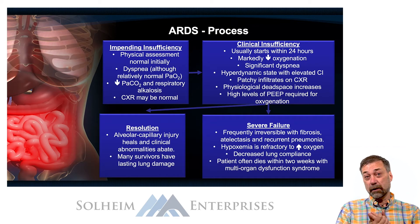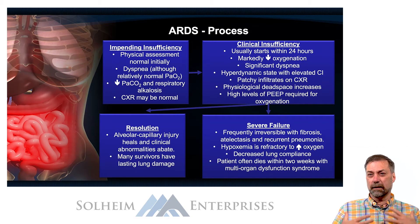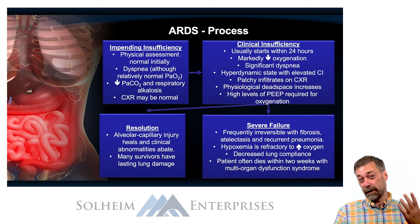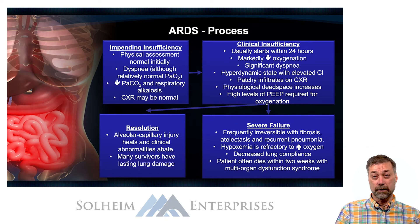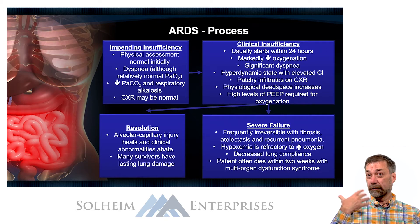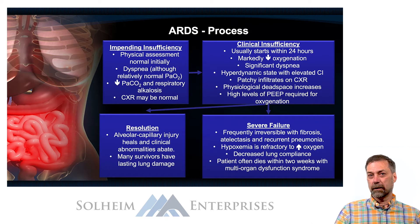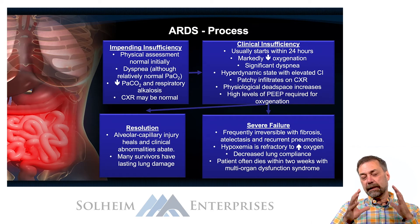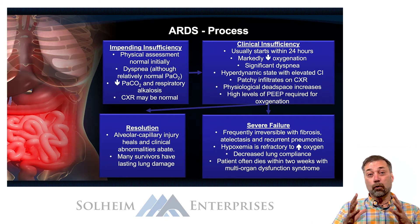In the beginning, PaO2s may be normal, but you see this dyspnea developing. As they become dyspneic they breathe faster, blow off CO2, and start to develop a respiratory alkalosis. For the first 24 hours, the chest x-ray may be normal — it's just the dyspnea that gives away an impending ARDS.